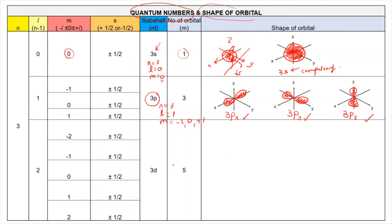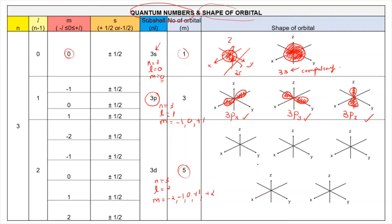For 3d, n equals 3, l equals 2, and m has five possible values: negative 2, negative 1, 0, plus 1, and plus 2, giving 5 orbitals. Draw a set of X, Y, Z axes for each orbital. The five 3d orbitals to draw are: 3dxy, 3dxz, 3dyz, 3d(x²-y²), and 3dz². Everything must be labeled. The orbitals named with two axes have their lobes in between those axes.